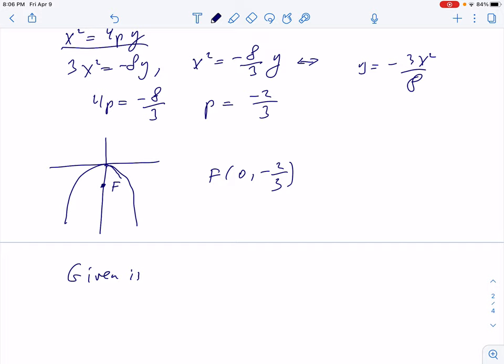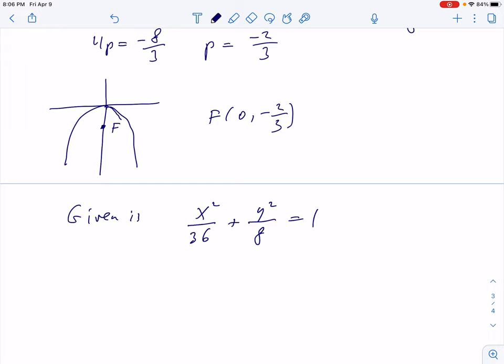Another standard problem. Given is the ellipse x squared over 36 plus y squared over 8 equals 1. A standard equation also called canonical equation. And we want to find the coordinates of the foci.